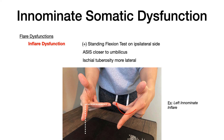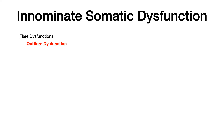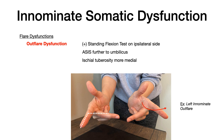An out flare is the opposite — one innominate moves more laterally. In a left out flare, the standing flexion test is positive on the left. The ASIS moves further from the umbilicus (laterally), and because the ischial tuberosity always acts opposite the ASIS, it moves more medially, closer to the umbilicus or midline.